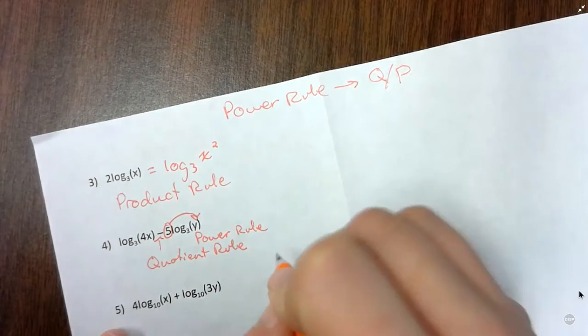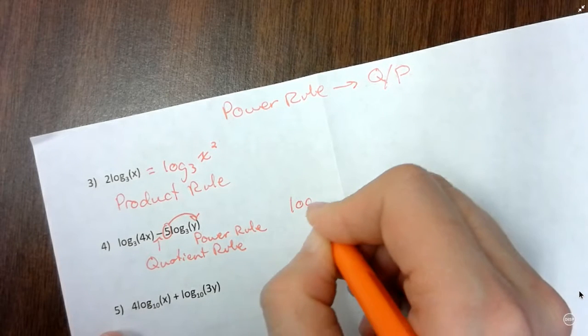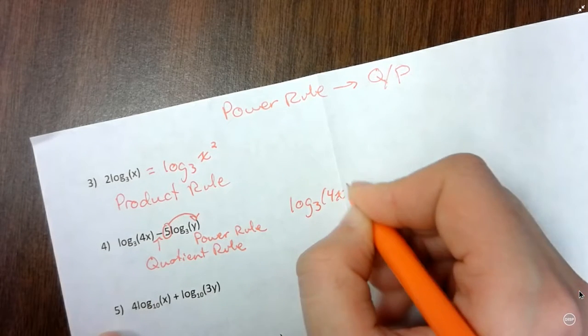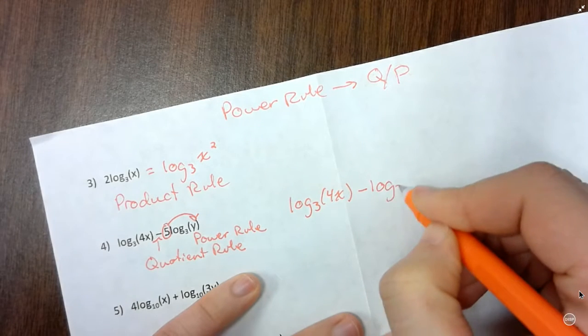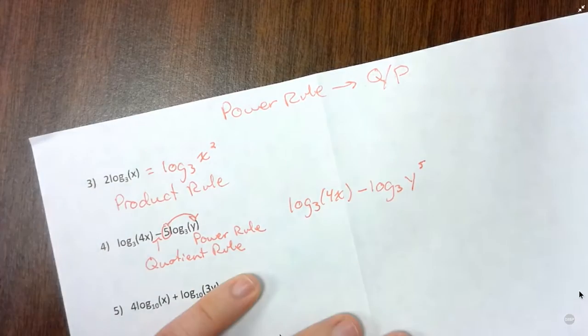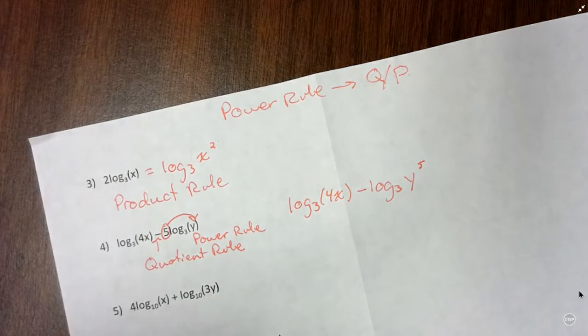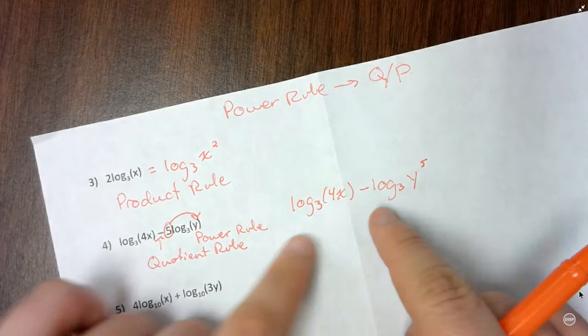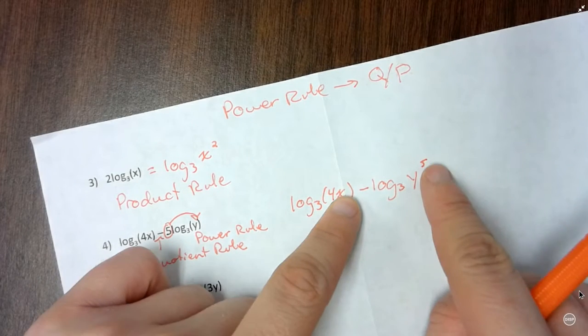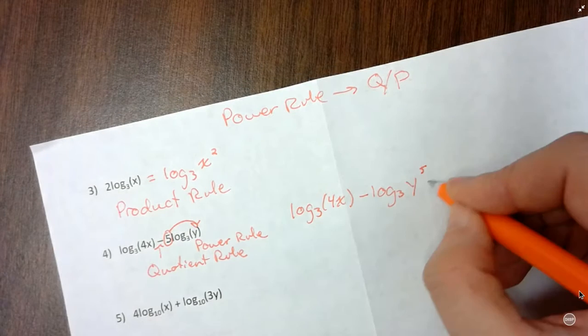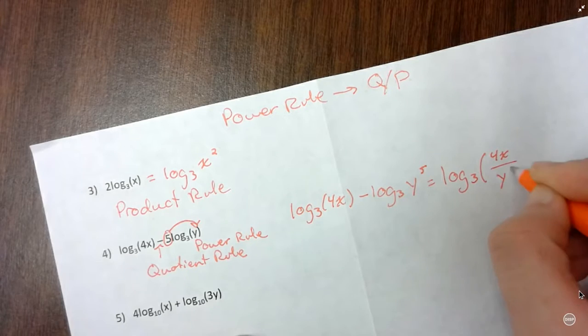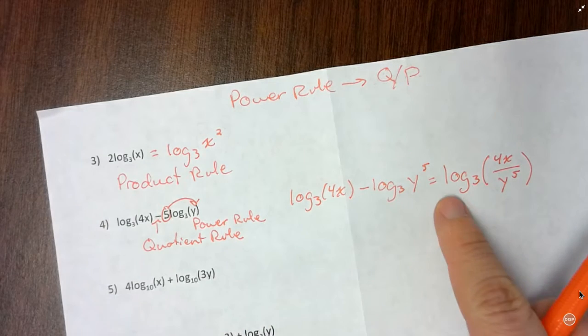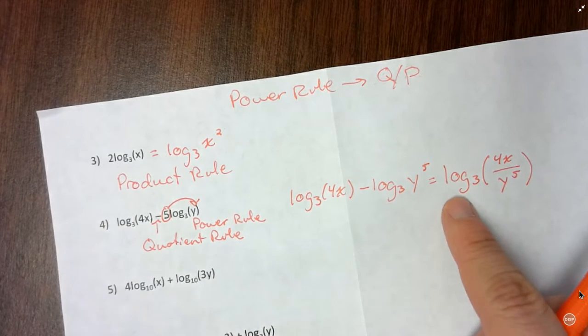So I'm going to do this in two steps. So I have log base 3 of 4x minus, now go ahead and do the power rule. So log base 3 of y to the 5th power. And then I'll go ahead and do my quotient rule. So I'll combine the 4x and the y to the 5th as a fraction or as a ratio. So log base 3 of 4x over y to the 5th. And then I'm done. They're combined into one log. And once they're combined into one log, then you can generally stop. You're good. You're done.